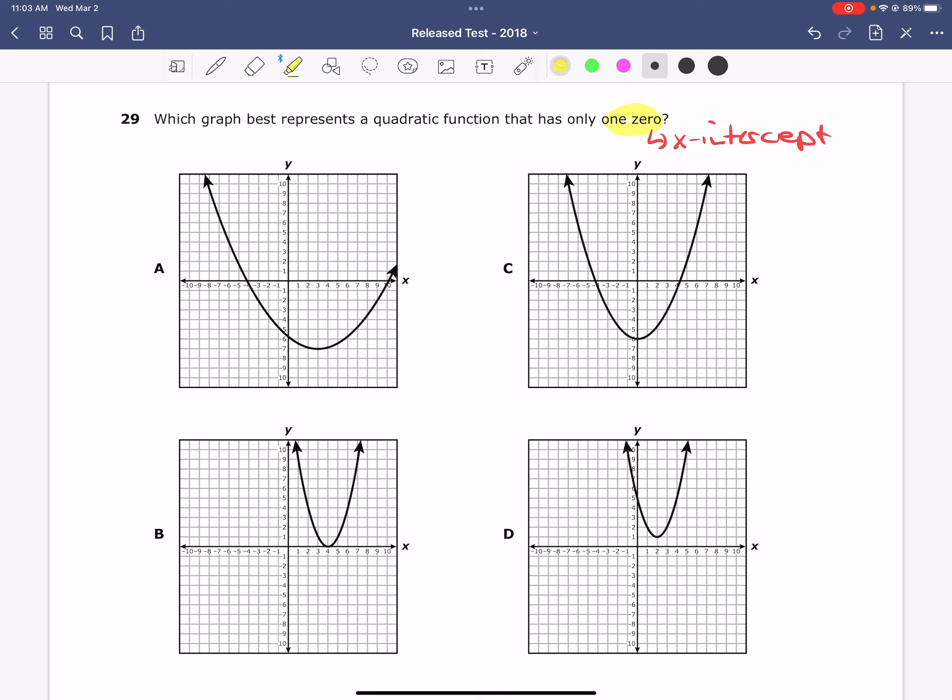If we look at the x-axis on our four answer choices, we're going to notice that only one of them crosses or touches the x-axis exactly one time.